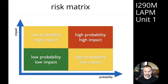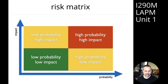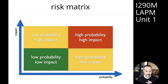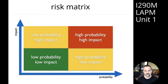Everyone goes and brainstorms for a few minutes on their own, then we stick the notes on the risk matrix in the right quadrant — top left for low probability, high impact risks; bottom right for high probability, low impact risks. Once you've spent a few minutes brainstorming, you can have a discussion as a group to think about which ideas are actually high probability, high impact, and you might move some of them around. Then you can focus on the high probability, high impact risks.